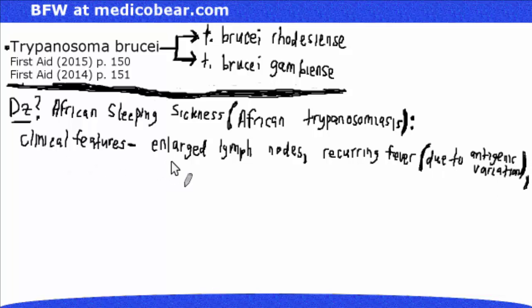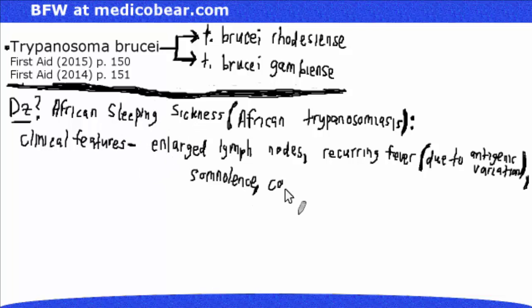Some other clinical features of African sleeping sickness are somnolence and also coma. Somnolence refers to a state of strong desire for sleep or sleeping for a long period of time. Coma is a state of deep unconsciousness that lasts for prolonged periods.